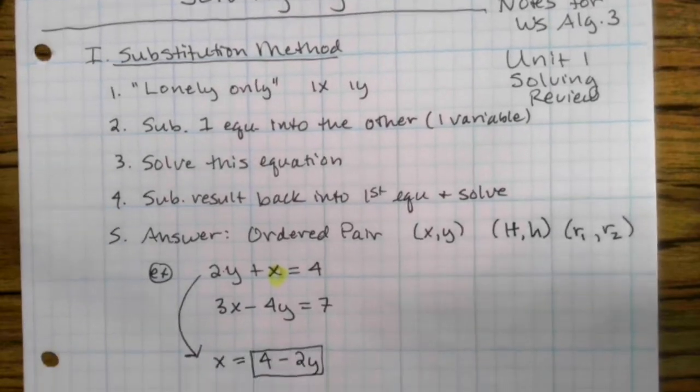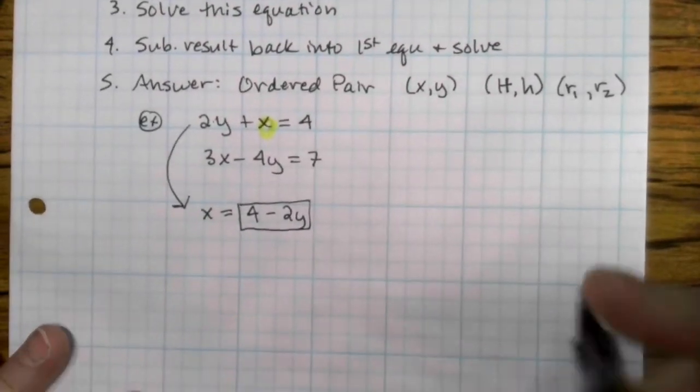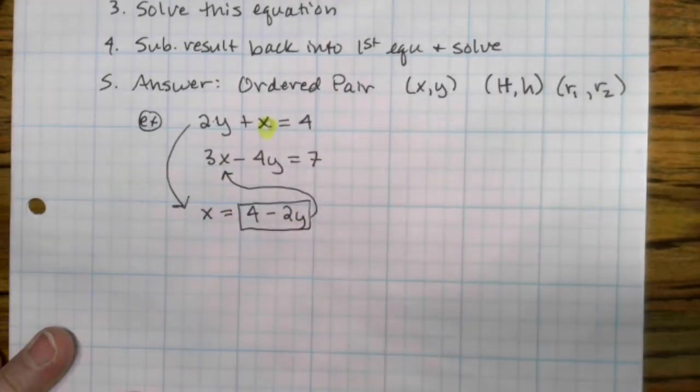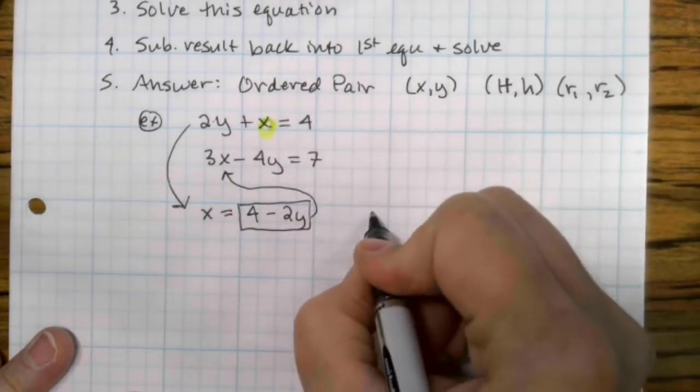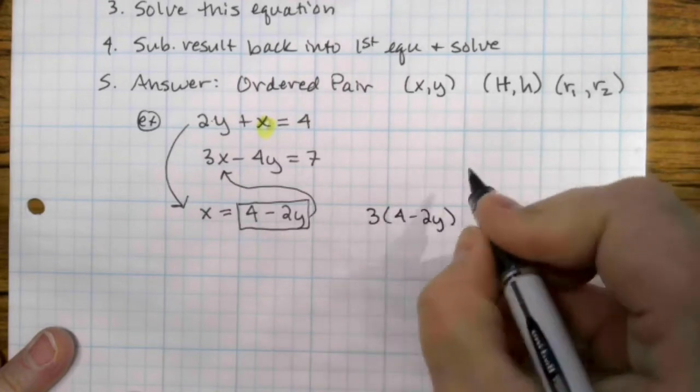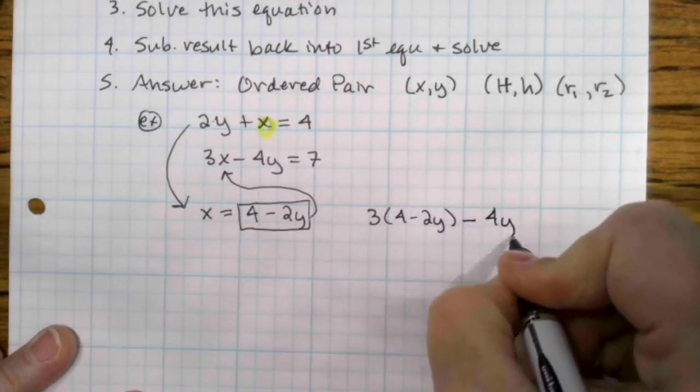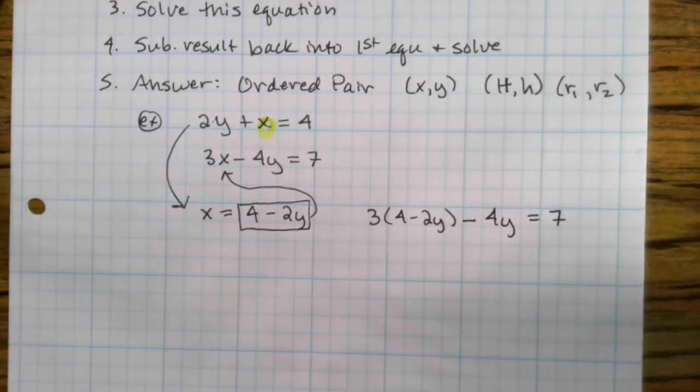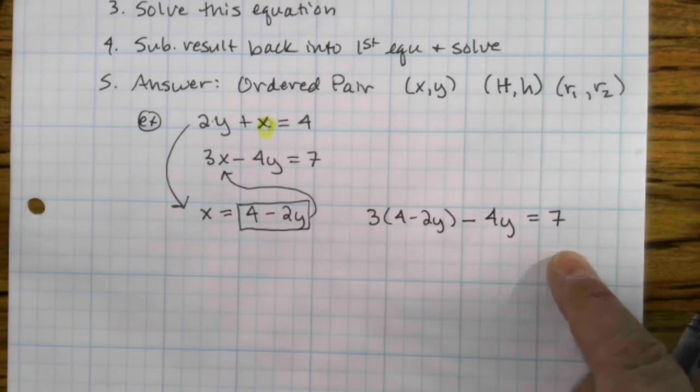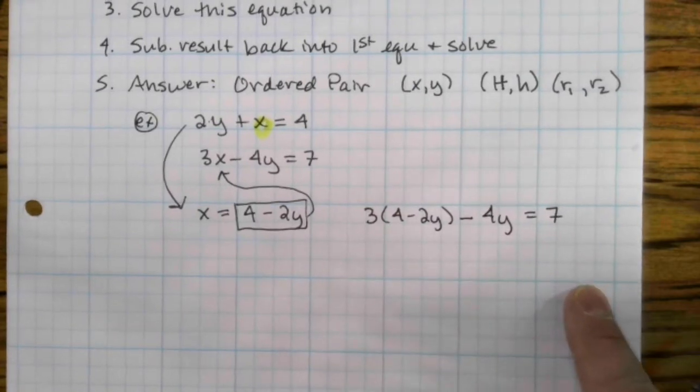This now we're going to substitute back into the first equation for the x. We're going to have 3 times 4 minus 2y minus 4y equals 7. Use your parentheses wisely. All right, so this is where we're on step 3. We're going to solve this. It will almost always start by distributing the 3.